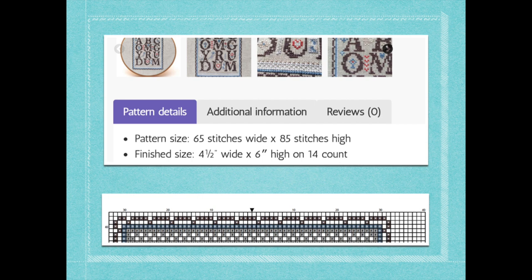Most cross stitch patterns have a darker grid line every 10 stitches vertically and horizontally. And that's how you calculate the number of stitches in case your pattern doesn't tell you.